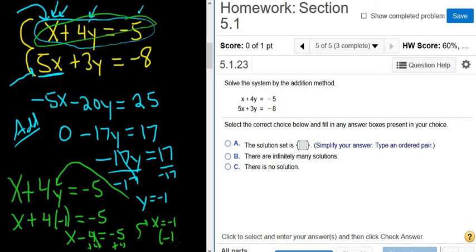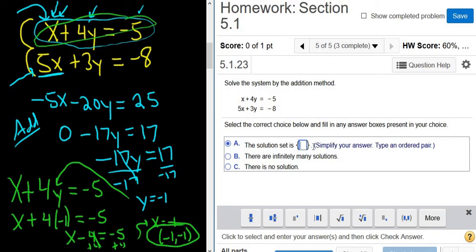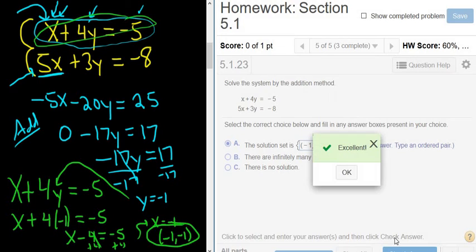So our ordered pair is negative 1 comma negative 1. All right, let's type it in. Parentheses negative 1 comma negative 1. Hit check answer. That's it.